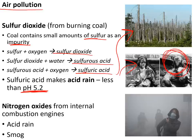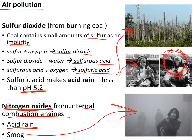Nitrogen oxides can also be produced by the high temperatures inside internal combustion engines in cars and other vehicles. These can produce acid rain and smog — a toxic chemical fog.